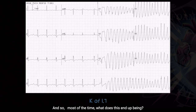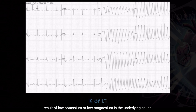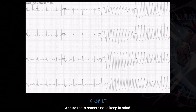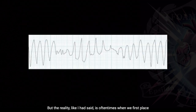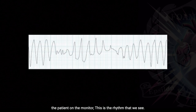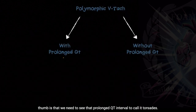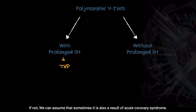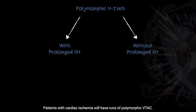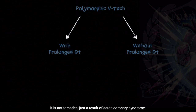Most of the time, what does this end up being? Usually a result of electrolytes. Torsades, or patients that have runs of torsades, are usually a result of low potassium or low magnesium as the underlying cause. A lot of times that's a result of medication use or GI losses. But the reality is, oftentimes when we first place the patient on the monitor, this is the rhythm that we see, and we're quick to call it torsades. Just remember that the rule of thumb is we need to see that prolonged QT interval to call it torsades. If not, we can assume that sometimes it is also a result of acute coronary syndrome — patients with cardiac ischemia will have runs of polymorphic VTAC. It is not torsades, just a result of acute coronary syndrome. It all relies on what that QT interval does in order to make that diagnosis.